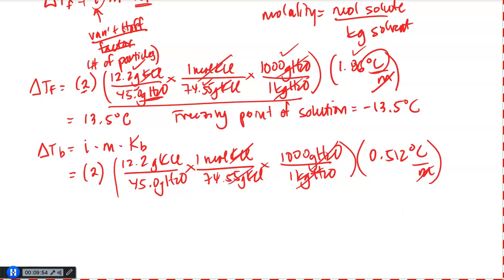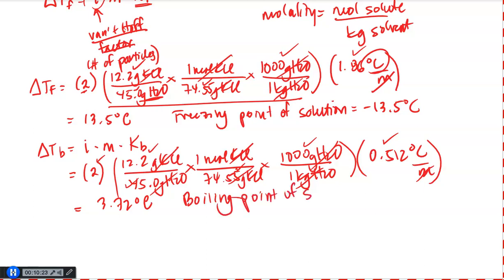My molality units cancel with everything in my center set of parentheses. If I do the math — take two, multiply by 12.2, divide by 45, divide by 74.55, multiply by 1000, and multiply by 0.512 — I end up with 3.72 degrees Celsius. That means the boiling point of this solution should be 3.72 degrees Celsius higher than the boiling point of water. Since the boiling point of water is 100 degrees Celsius, I add 3.72 to 100 and get a new boiling point for the solution of 103.72 degrees Celsius, or rounded to three significant figures, 104 degrees Celsius.